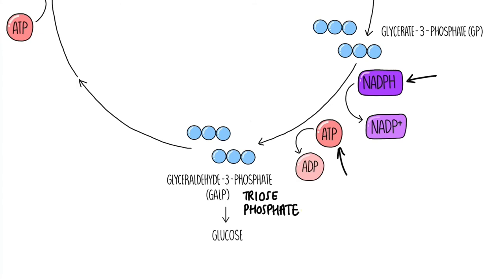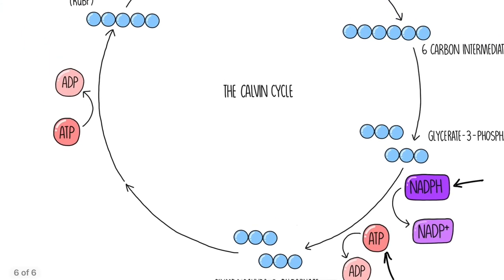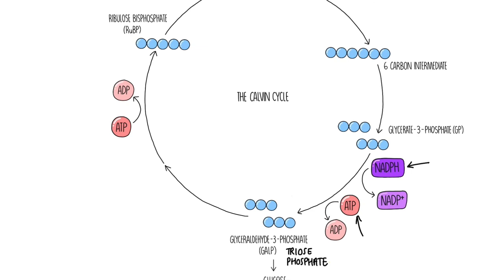The GALP can then be siphoned off, and that's how glucose is made. To generate glucose, though, we need six turns of the Calvin cycle, because glucose is a six-carbon molecule. For every turn of the Calvin cycle we can siphon off one carbon, because we're going to regenerate this five-carbon molecule called ribulose bisphosphate. Every time it turns, we take a carbon off GALP and use it to create glucose — which means we need to go six times around to create one glucose molecule. We could then convert that glucose into other things like lipids, amino acids, and nucleic acids. The other five carbons of GALP are going to be recycled back into ribulose bisphosphate, or RuBP, and that conversion requires energy — so we're hydrolyzing ATP into ADP.